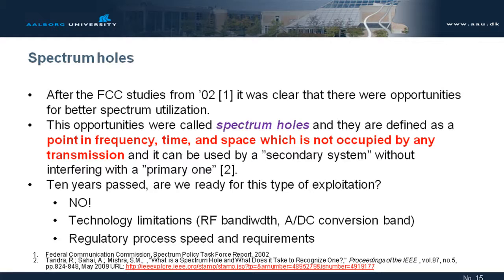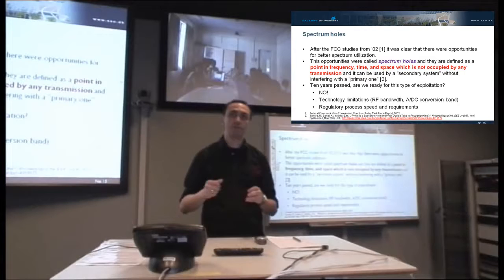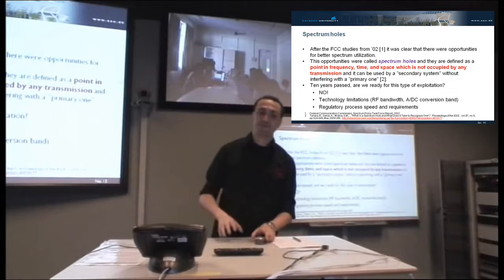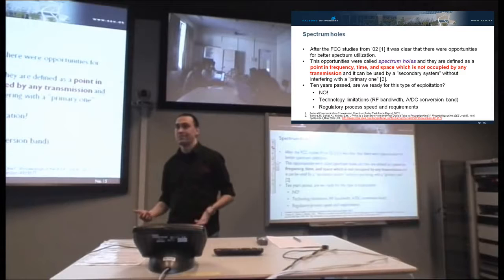We call this opportunity a spectrum hole, and their usage is called opportunistic usage of the spectrum because we exploit the opportunity. Then came also the definition of what is a primary user — someone who has the license, has paid for it or received it from the government, and has the full right to use it — and the secondary system that exploits this opportunity and needs to do it without interfering with the primary user or system. Now, 1999 cognitive radio came out, 2002 spectrum holes were defined. Ten years have passed. We should be ready. We should be using this technology now. No.